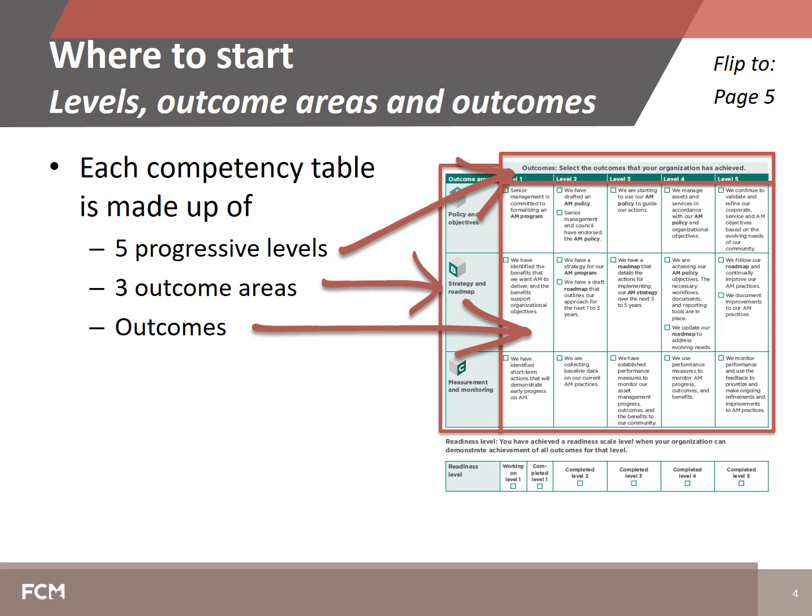In the Asset Management Readiness Scale document, you will see that each of these competency areas has its own table. The table you see on this slide is the competency table for policy and governance. There are three parts to each table, which are also described on page 5 of the Asset Management Readiness Scale: levels, which are across the top of the table; outcome areas, which are down the left-hand side; and outcomes, which make up the body of the table.